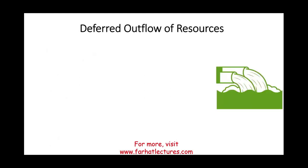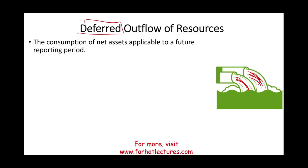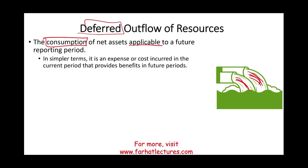Now let's move on to a new term: deferred outflow of resources. These are resources that are leaving us but are deferred. The definition is the consumption of a net asset — that is, assets minus liabilities. The key point is that this consumption is applicable to a future period. We are consuming something now, but we cannot expense it until later. It is a cost incurred in the current period that provides benefit for a future period.